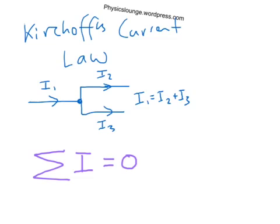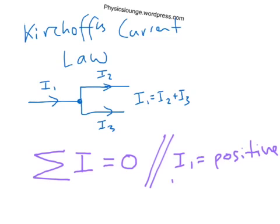And you could call this sort of a semi-vector kind of thing because any current that is going in, in this case I1, is positive. And any current going out, I2 and I3, would be negative.